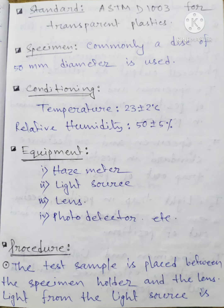The standard is ASTM D1003 for transparent plastics. A specimen commonly used is a disc of 50 mm diameter. Conditioning temperature is 23 plus or minus 2 degrees, relative humidity 50 plus or minus 5 percent. Equipment used includes a hazemeter with a light source, lens, and photodetector.